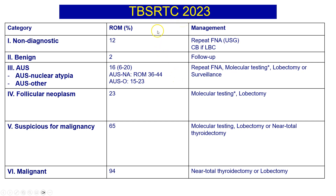This is the third edition and there are six categories: non-diagnostic, benign, AUS — which is subdivided into AUS nuclear atypia as well as AUS other, with further subcategories within these — then follicular neoplasm, suspicious for malignancy, and finally malignant.